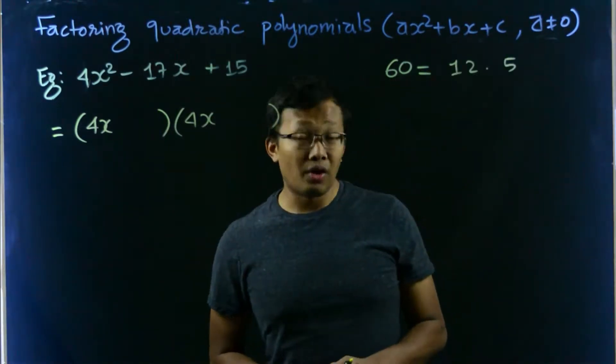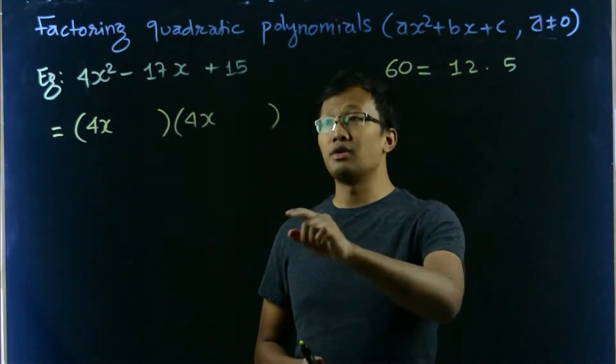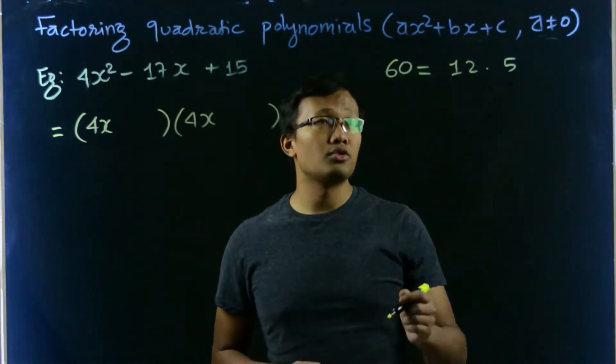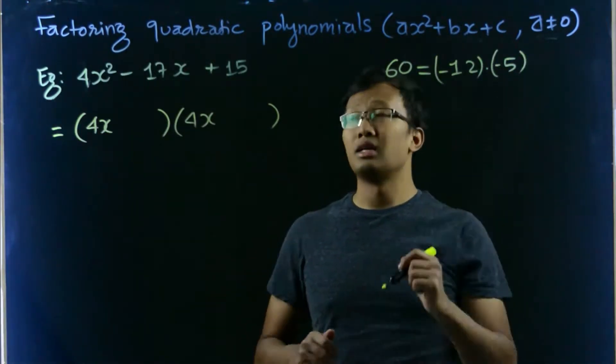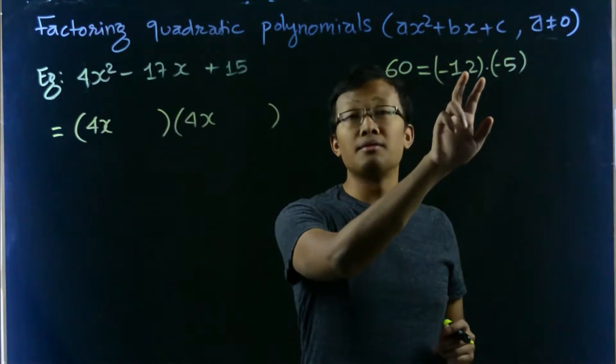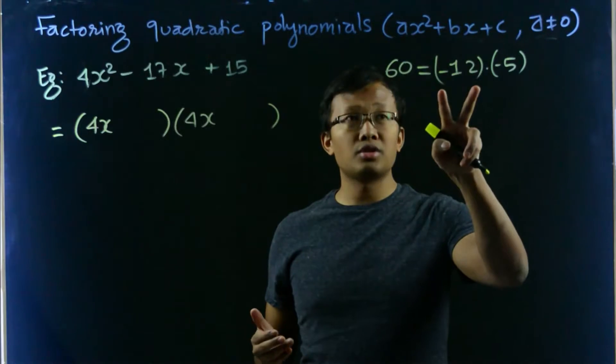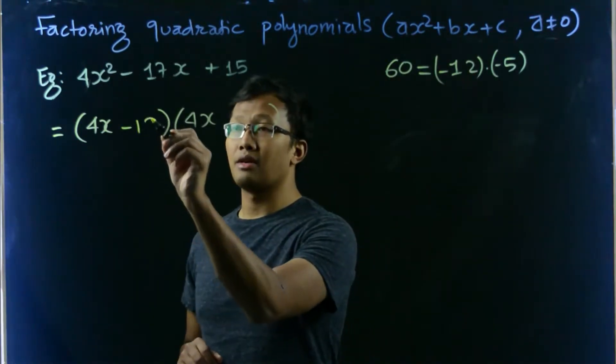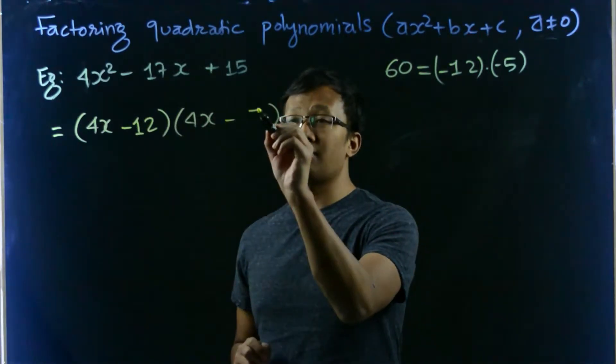So why I choose 12 times 5 is 12 plus 5 will give us 17. And if I choose negative 12 times negative 5, then I will be getting negative 12 plus negative 5 is negative 17. So that's why I choose negative 12 and negative 5. Let's write down here. So 4x minus negative 12 and 4x minus 5.